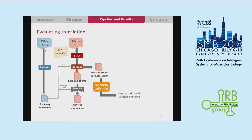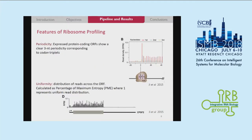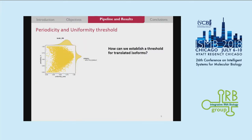Additionally, we are going to evaluate the evidence of translation with two key features of ribo-seq profiling: periodicity and uniformity. Periodicity is expected to occur at every three nucleotides corresponding to codon triplets. We evaluated the most abundant frame, which is the first frame, and for uniformity, it basically stands for how the reads are distributed across the open reading frame.